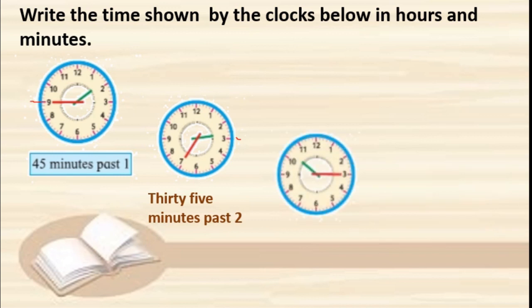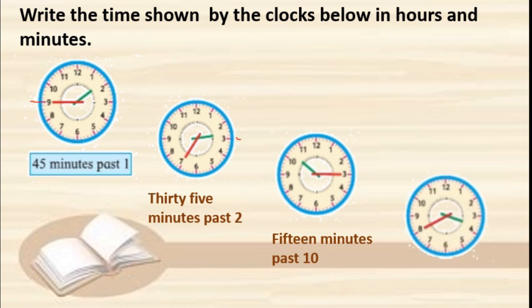See the next clock — very easy. 15 minutes past. The hour hand is between 10 and 11, so it is 15 minutes past 10. Next clock: the minute hand is on 40 — that is 30, 35, 40. The hour hand is between 3 and 4, so it is 40 minutes past three.